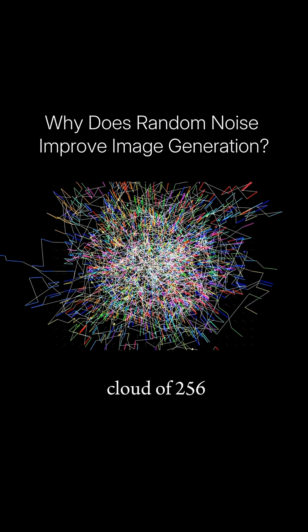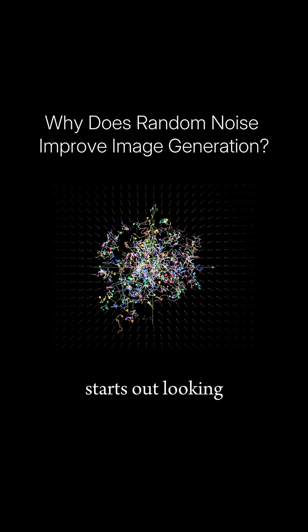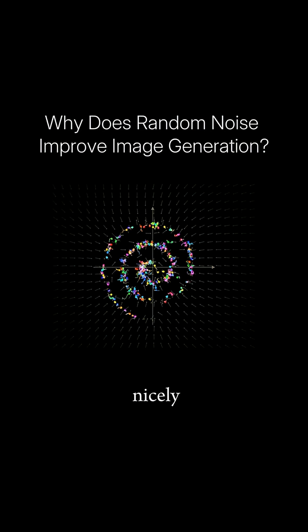Repeating this process for a point cloud of 256 points, our reverse diffusion process starts out looking like absolute chaos, but does converge nicely.